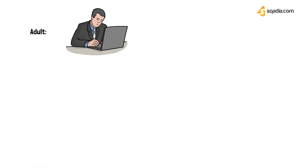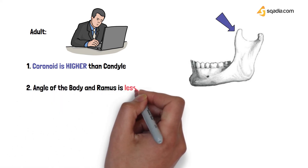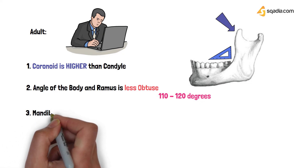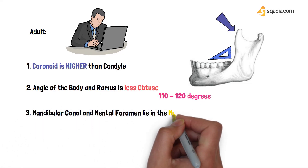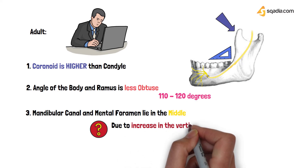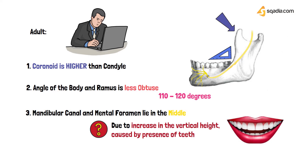In adulthood, the condyle moves higher than the coronoid. The angle of the body and ramus becomes less obtuse, around 110 to 120 degrees. The mandibular canal and mental foramen lie in the middle of the mandible — they have moved upwards due to the presence of teeth, as the alveolar processes helped the body grow in height. The sigmoid notch is deepest at this age.